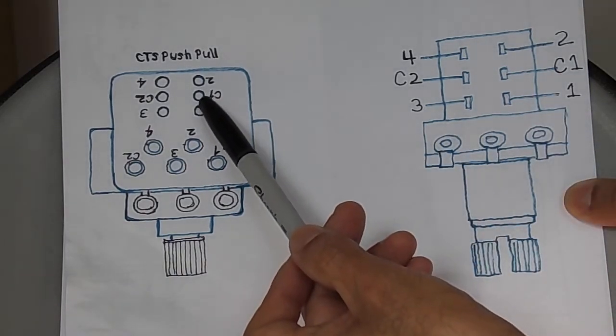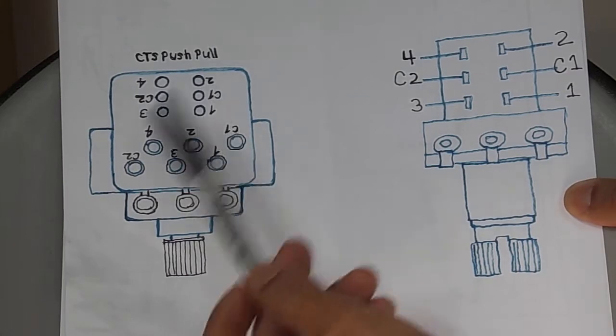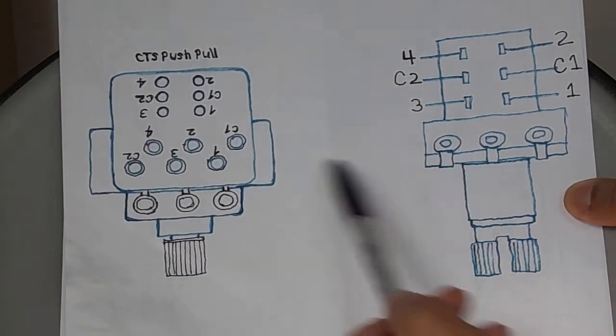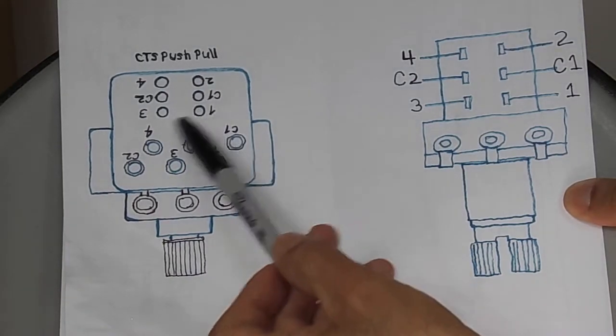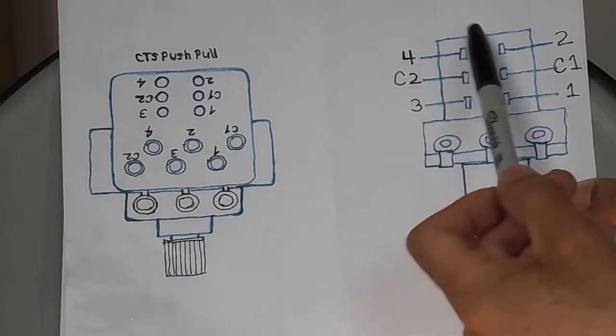So if you had to solder something on the right on the classic push-pull pod, the second one would correspond with C1 on the CTX push-pull pod. So you would just solder to C1 down here.